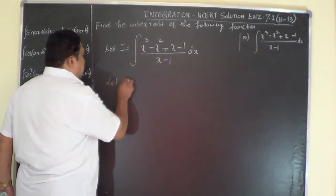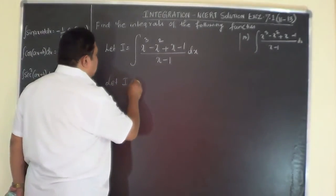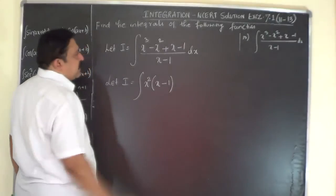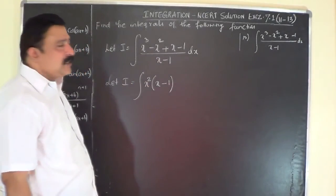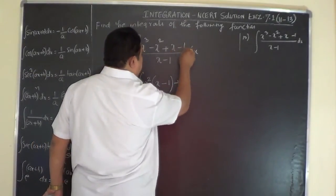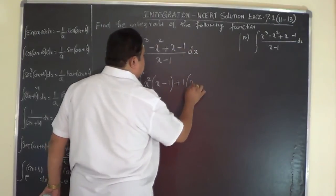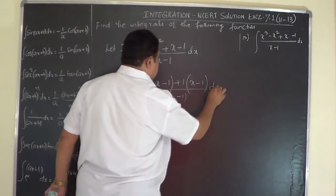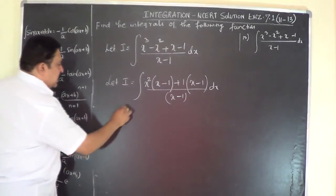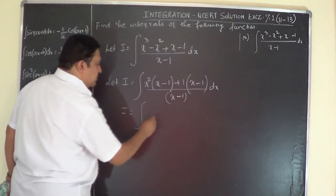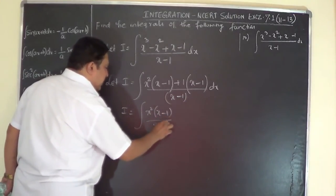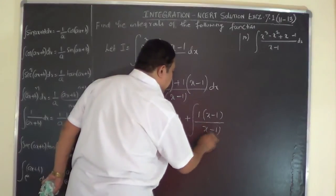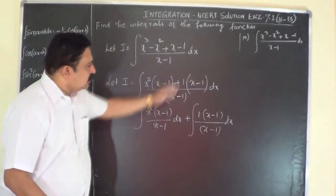In this case, look for some simplification which is already available in the problem. From the first two terms of the numerator, take x² as a common factor — you get x²(x - 1). From the next two terms, 1 is the common factor — you get 1·(x - 1). So the numerator becomes x²(x - 1) + 1·(x - 1), divided by (x - 1) dx. Now you can split it: x²(x-1)/(x-1) plus 1·(x-1)/(x-1).